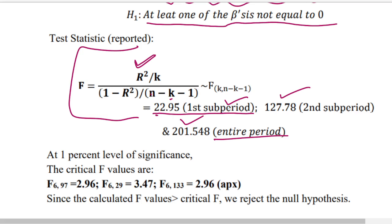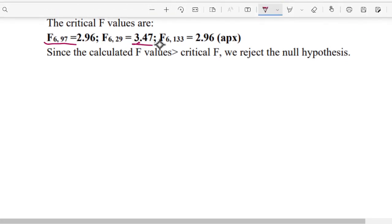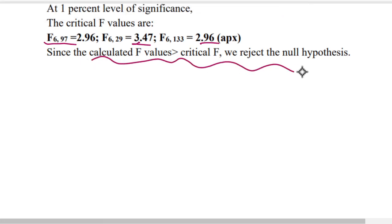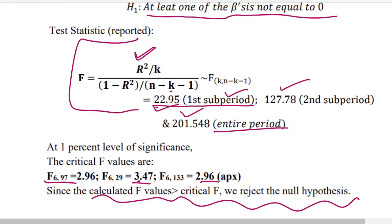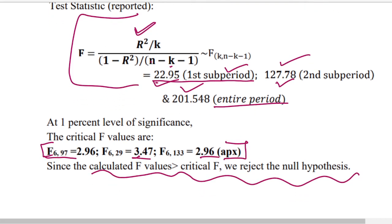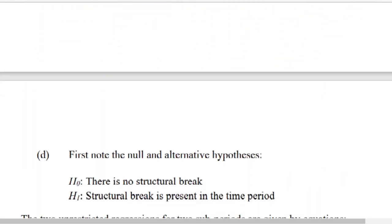At the one percent level of significance, the critical F-values are obtained from the F-table using the degrees of freedom. The calculated F-values of 22.95 and 12.7 are greater than the critical values, so we reject the null hypothesis. This means the models are overall statistically significant.